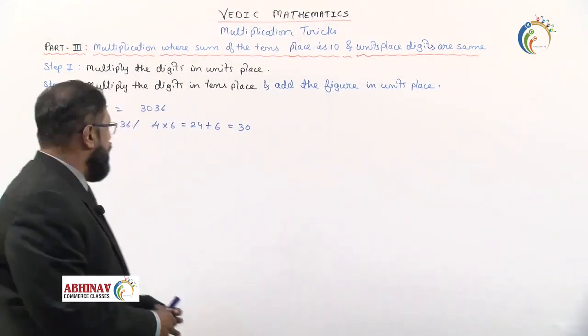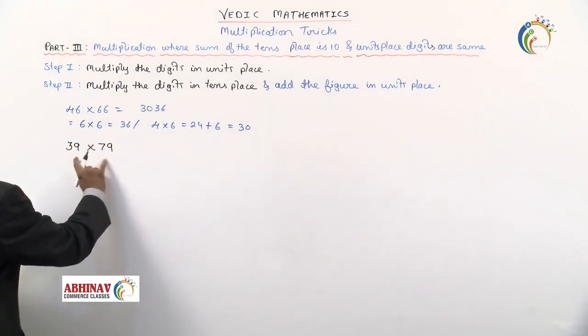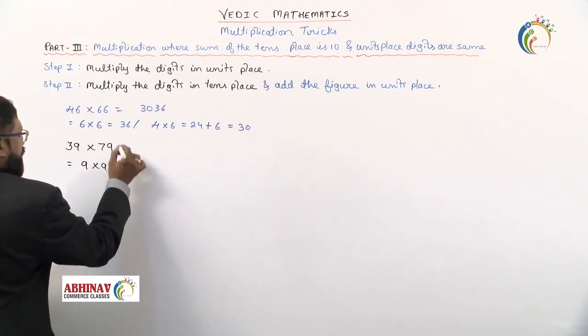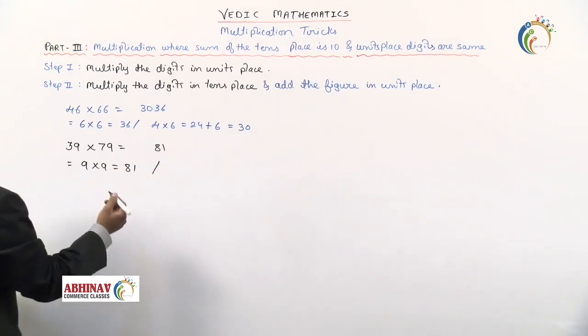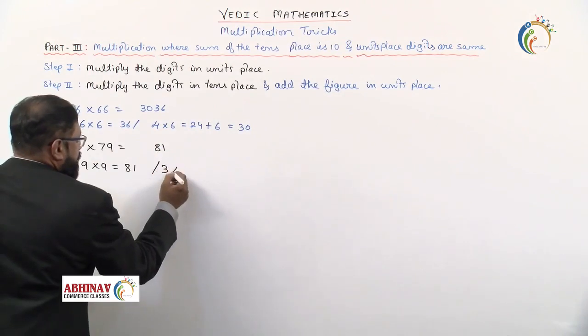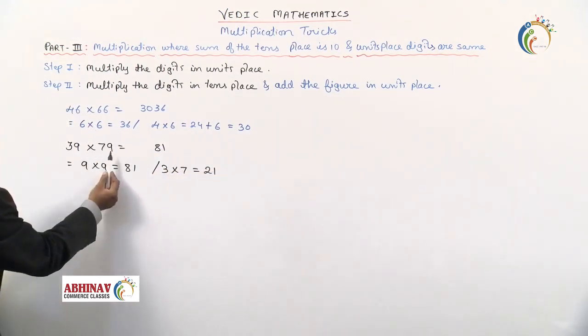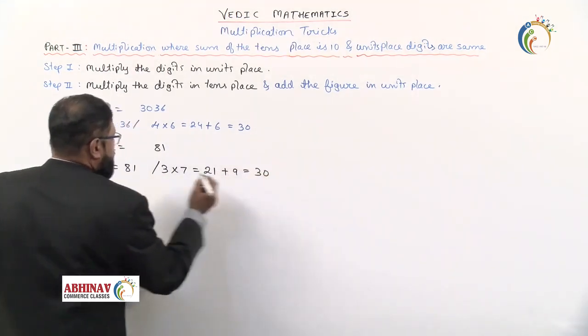Here write 30 to the left. So 46 multiplied by 66 will be 3036. Another example: take it as 39 into 79. Units place is the same and the tens place sum is 10. Let's see. First, units place: 9 into 9 is equal to 81. So to the right hand side we'll write 81. Second step, we'll take up now 3 into 7. 3 into 7, what we get is 21.